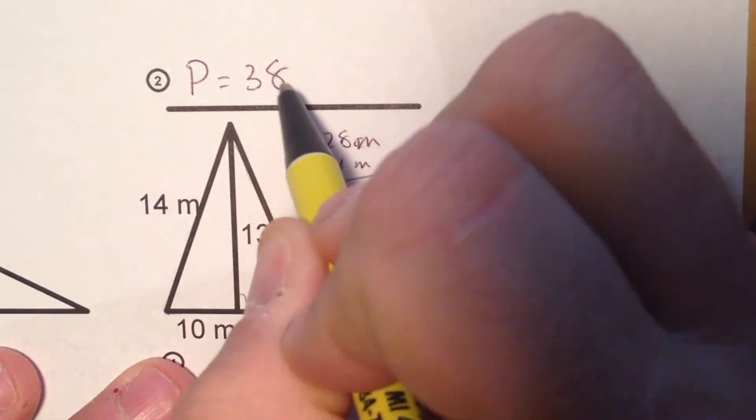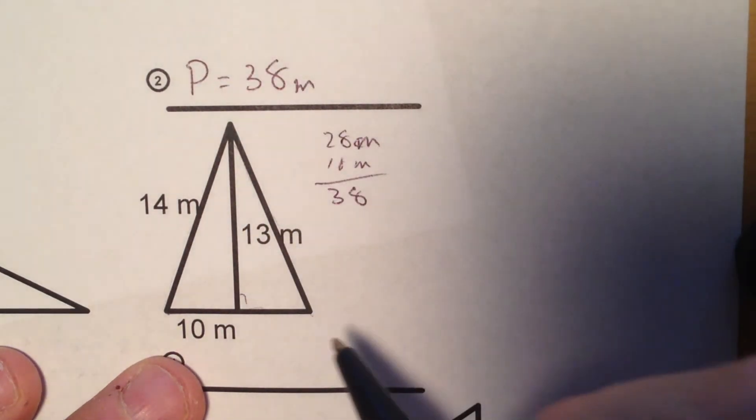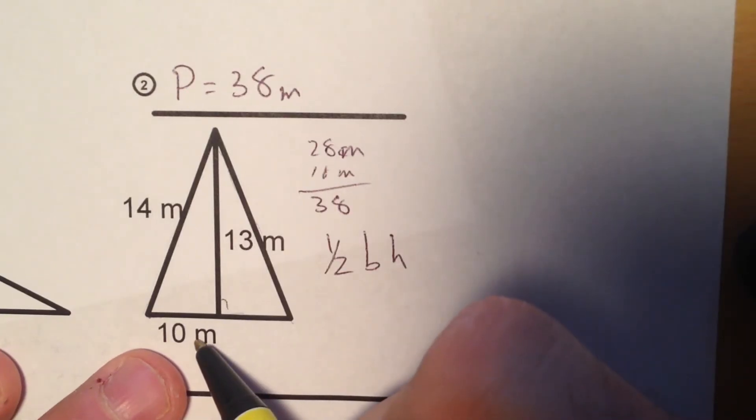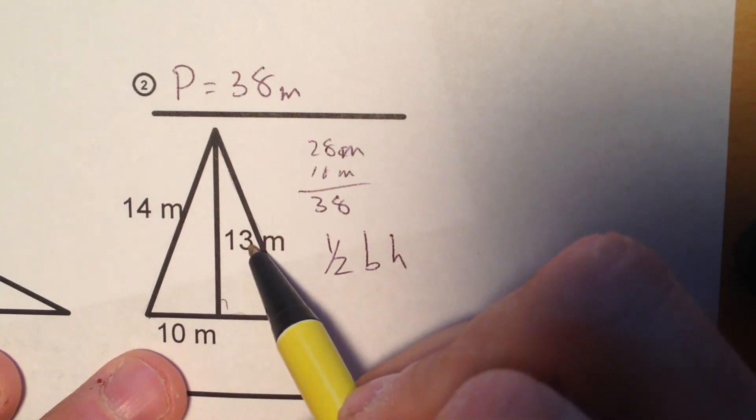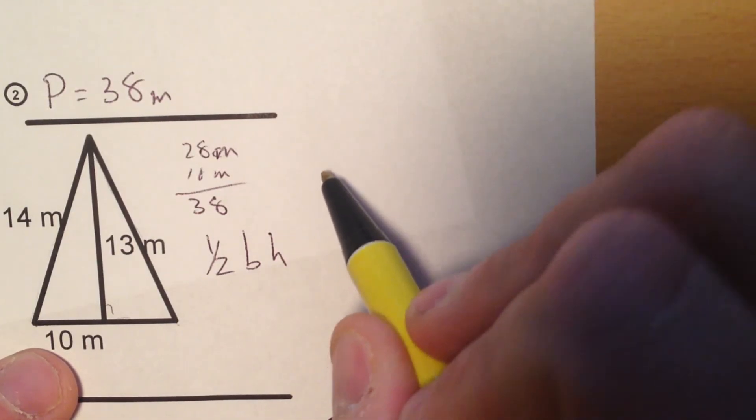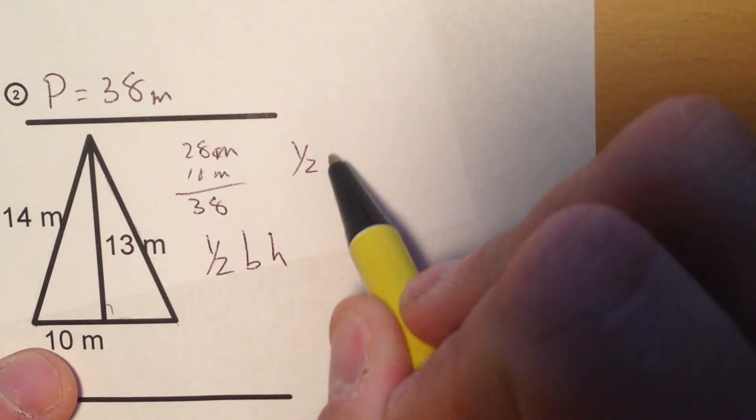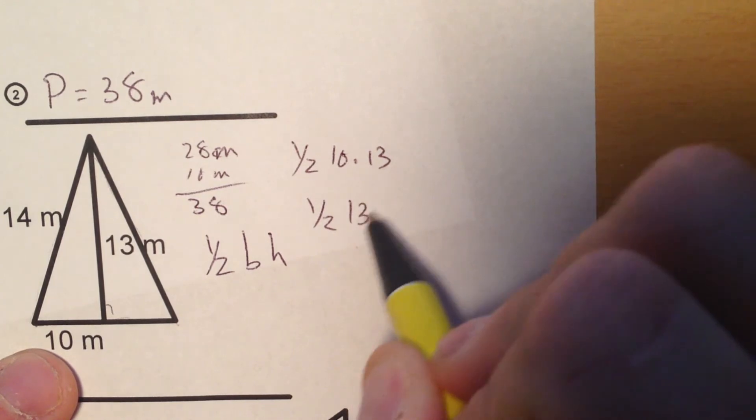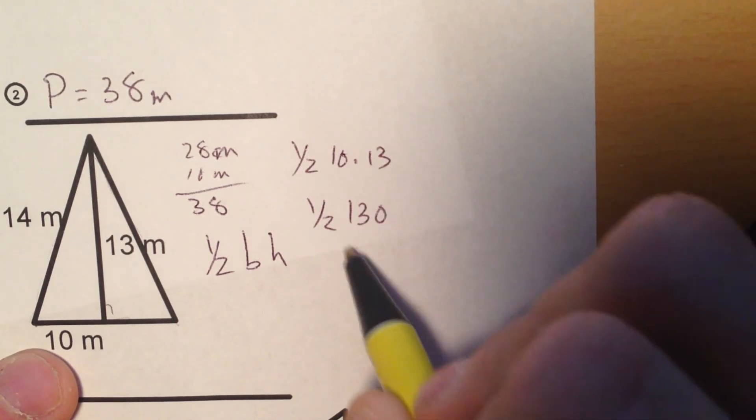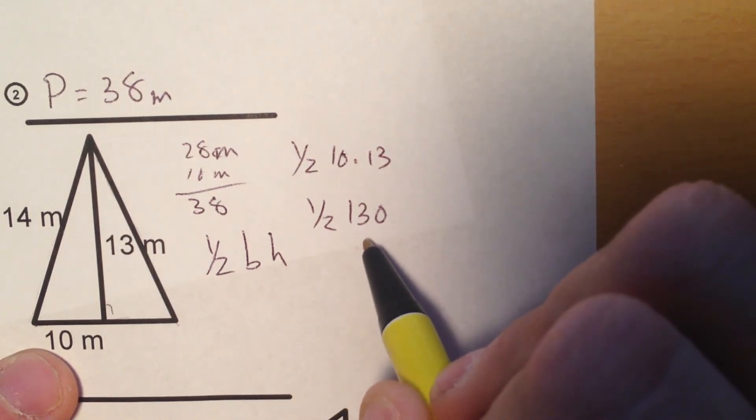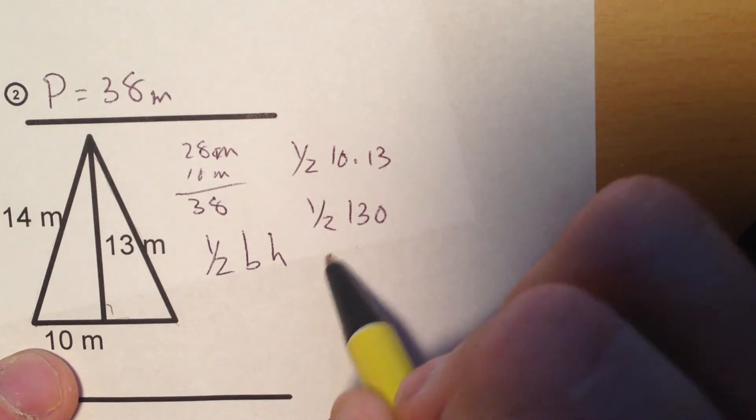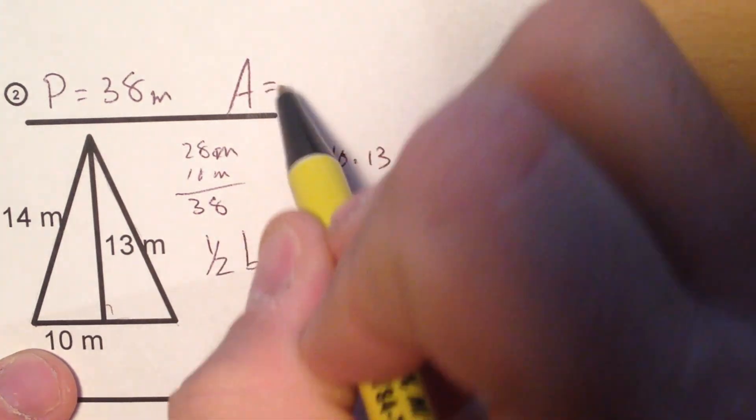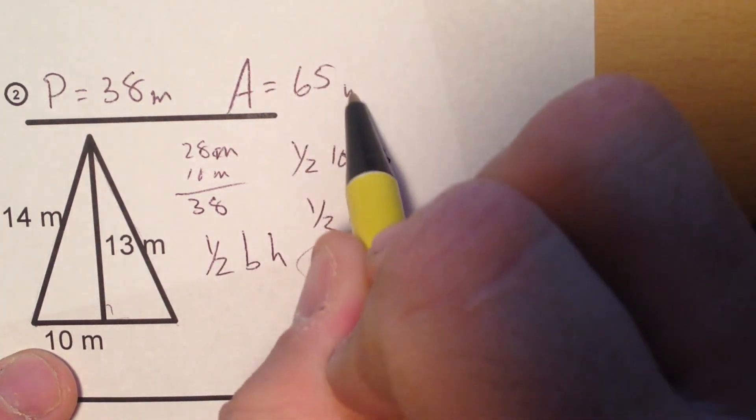Now what's the area? One half base times height. Base is 10, height is 13, so I'm going to take one half of 10 times 13. That would be one half of 130. Half of 130 is 65, 65 meters squared. So the area equals 65 meters squared.